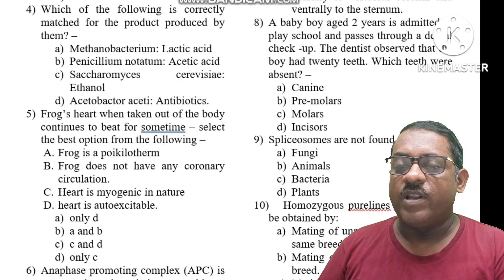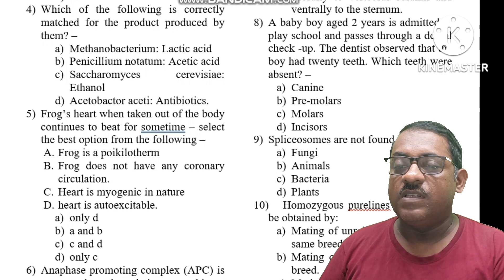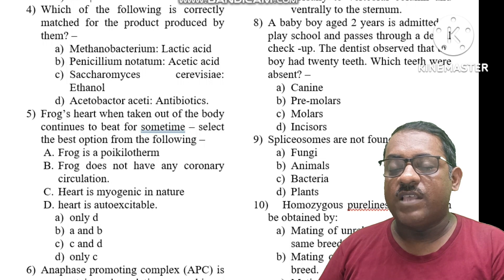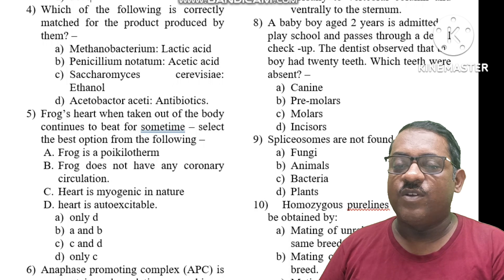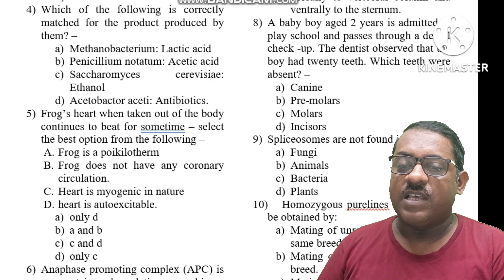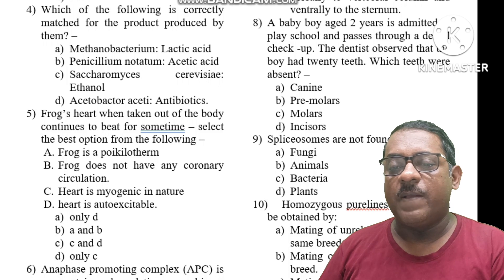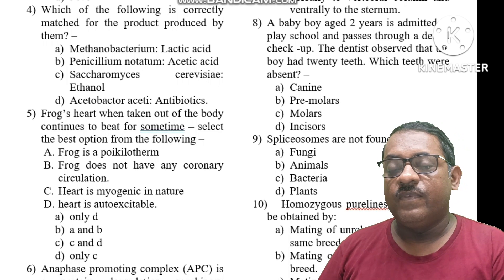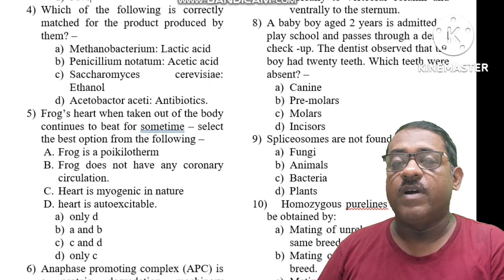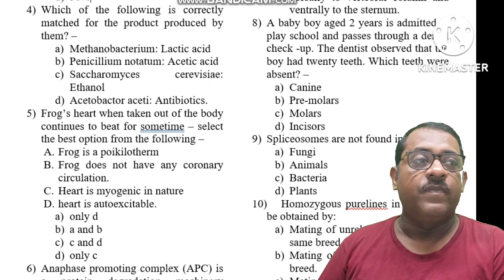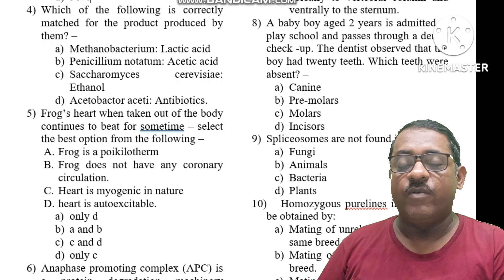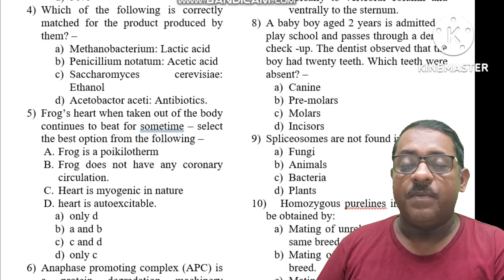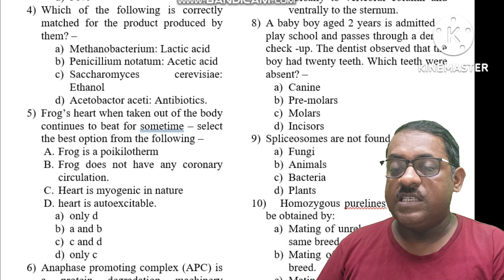Question number 5: A frog's heart, when taken out of the body, continues to beat for some time. The best explanation is that the heart is myogenic in nature — it contracts automatically. The heart is auto-excitable and myogenic. The correct answer is option C and D.